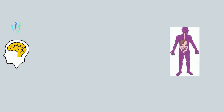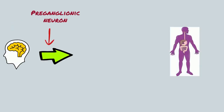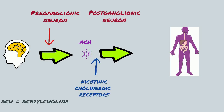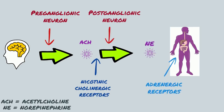An adrenergic response occurs when the nervous system receives a specific trigger initiating preganglionic neuron impulse. Acetylcholine is released by the preganglionic neuron, binding with the nicotinic receptors of the postganglionic neuron, and norepinephrine is released, binding with the adrenergic receptors throughout the body.